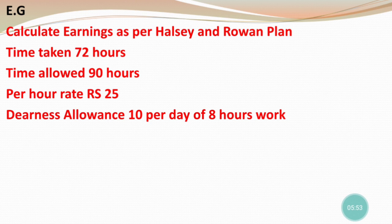Time taken is 72 hours — this means one worker took 72 hours to complete the target. Time allowed was 90 hours. So time allowed is 90 hours and time taken is 72 hours. To find time saved: 90 minus 72 gives the time saved. The rate per hour is 25. For dearness allowance, if the rate is 10 per day for 8-hour days, divide by 8 to get the DA rate per hour.